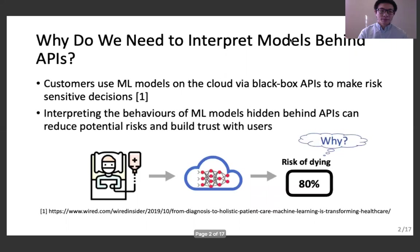As we all know, Internet giants are already offering machine learning as services. They take advantage of their rich computing power to train powerful machine learning models and provide customers with API access to those models. Customers are using those APIs to make risk-sensitive decisions. Take healthcare as an example. Hospitals may apply machine learning models on the cloud to predict the dying risk of patients.